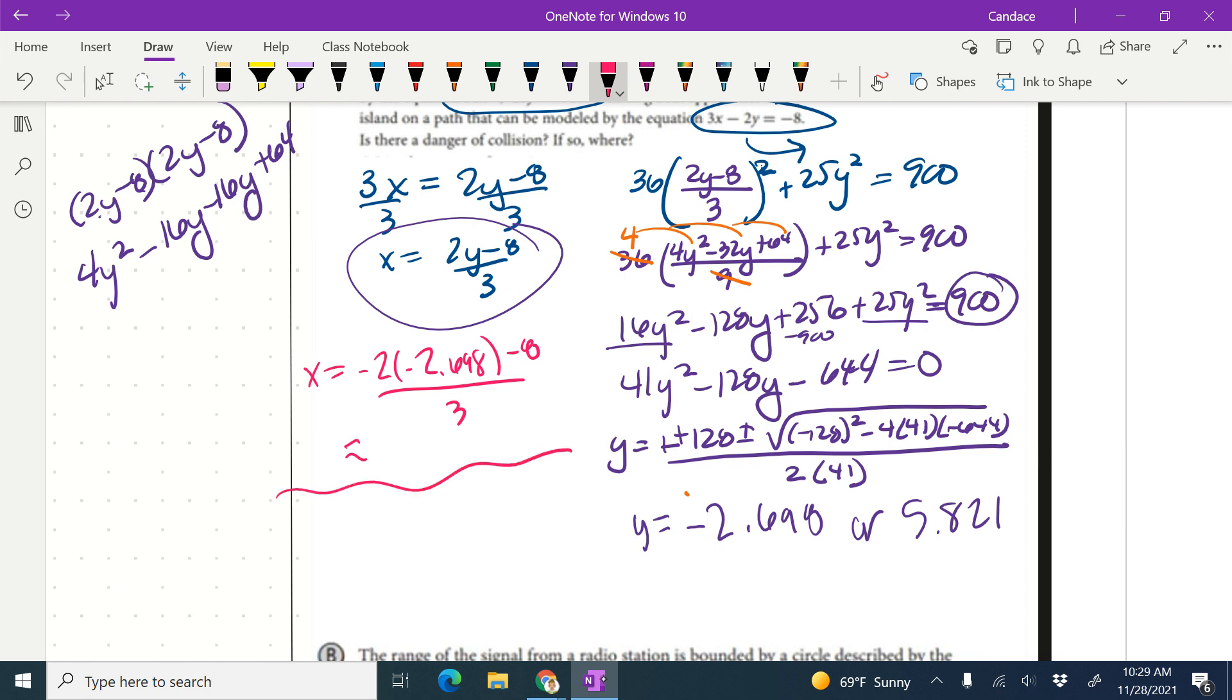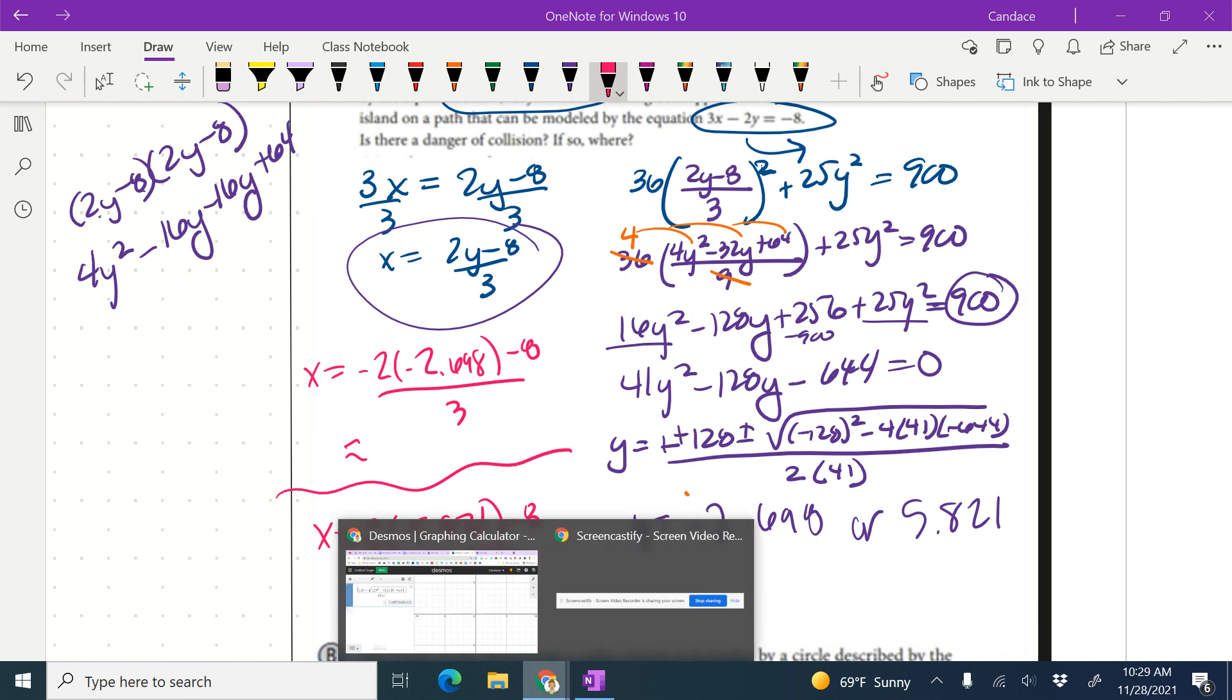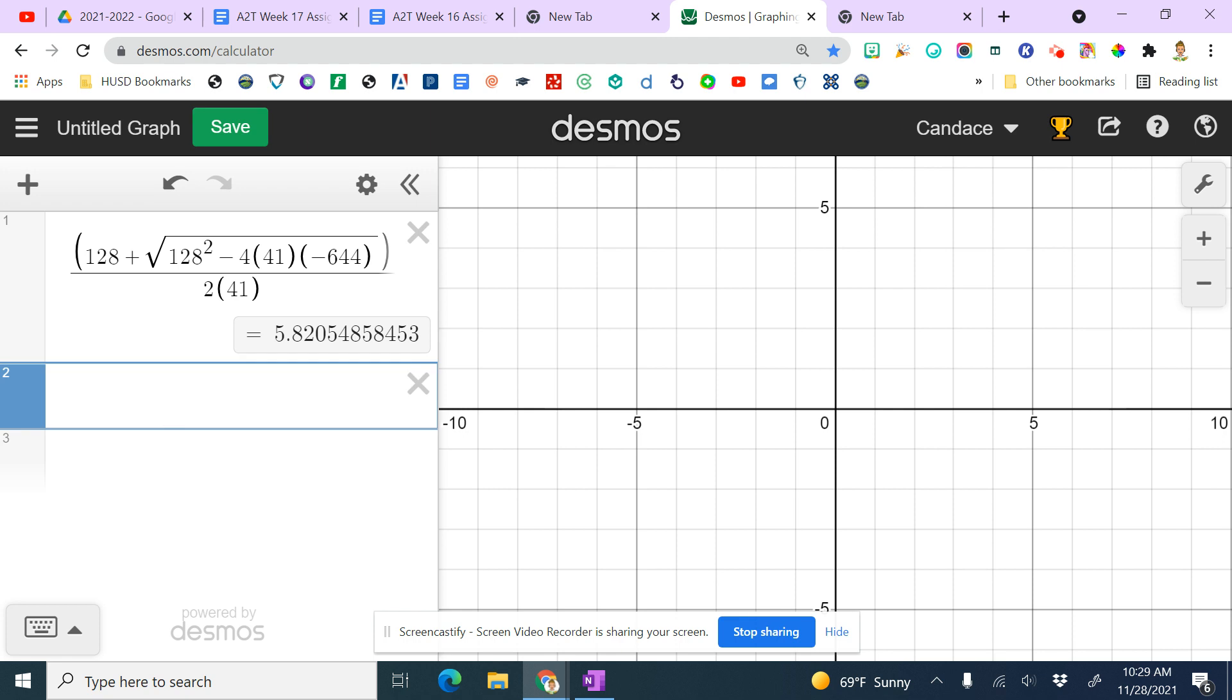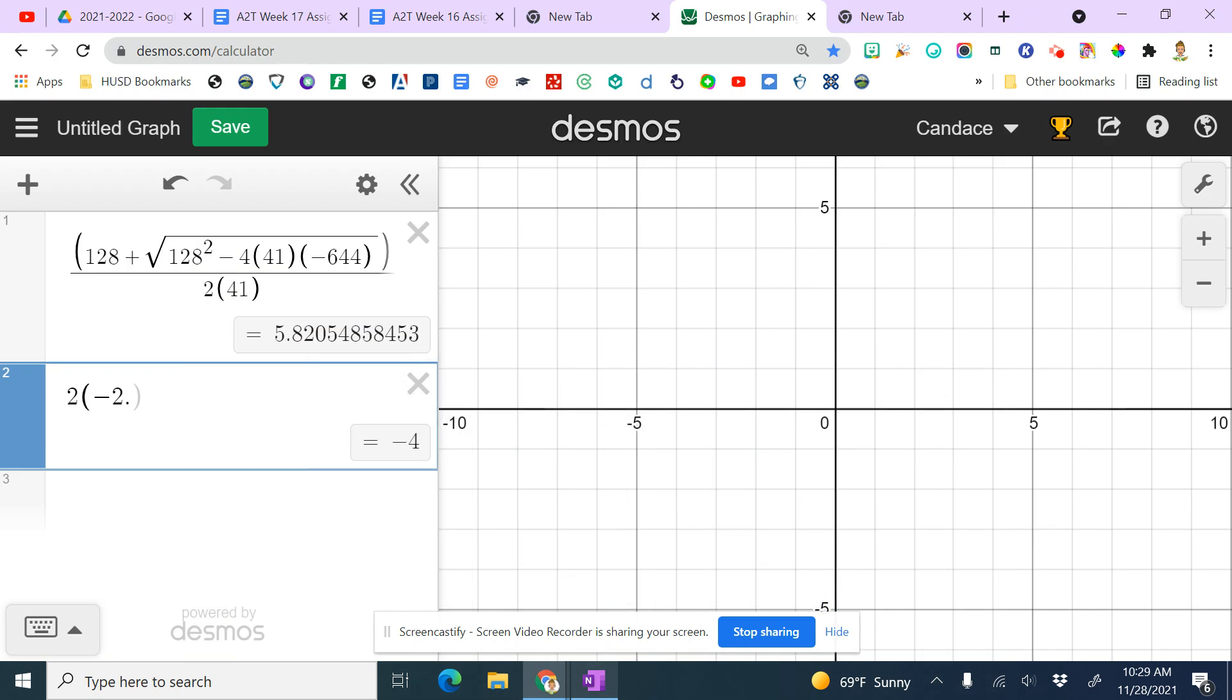So again, I'm going to use Desmos to help me with that calculation as well. So it is 2 times negative 2.698 minus 8, and I should have used some parentheses, divided by 3.